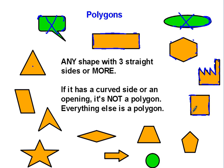This one here, straight sides, it's a polygon. Straight sides, polygon. Straight sides, polygon. Curve side, not a polygon. Straight sides, polygon.